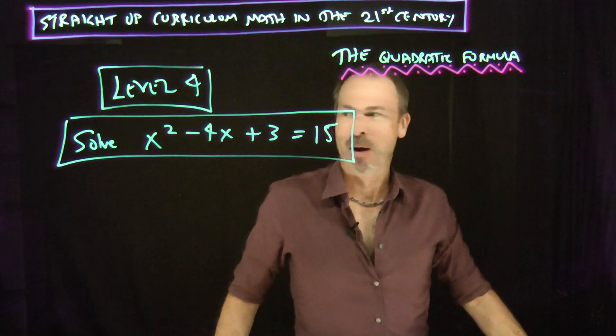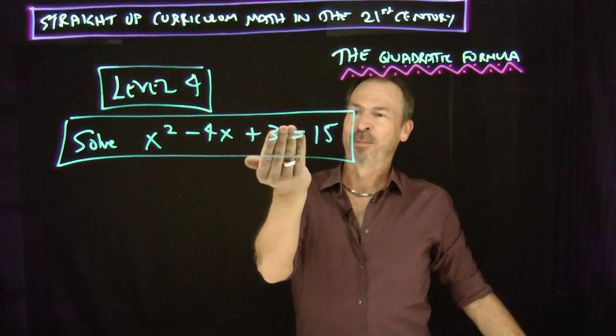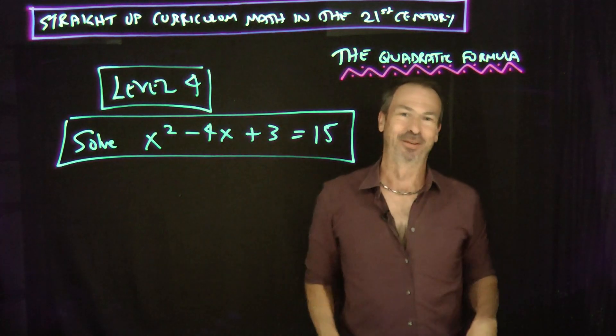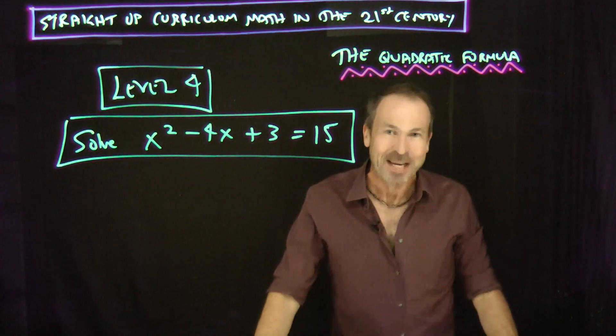Okay, here's a level 4 problem, but actually it's x squared minus 4x plus 3 equals 15, kind of looks like level 3. I bet that's really level 2 in disguise.